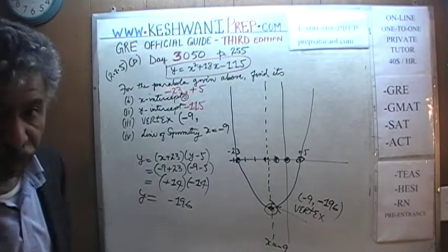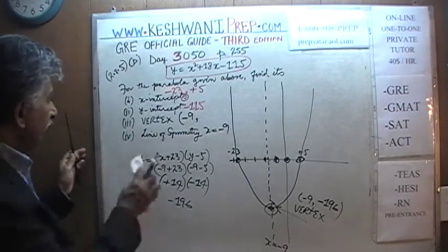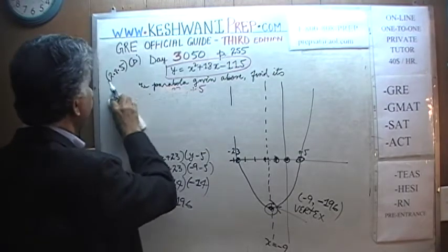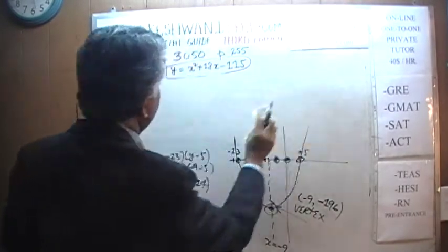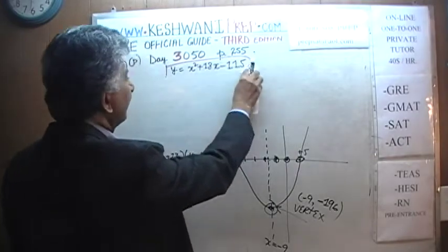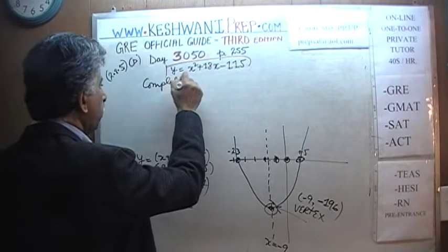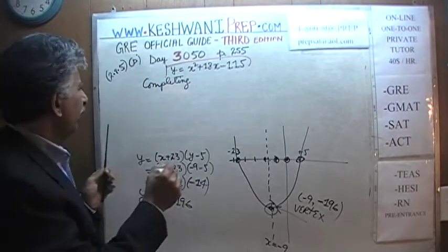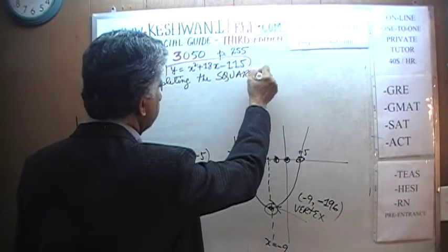That confirms the vertex. Now let's do it algebraically, which is more efficient, elegant, and classy. The process is known as completing the square. Let's erase and start. If the equation is given in expanded form, we rewrite it in a form that clearly shows the coordinates of the vertex.